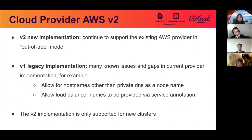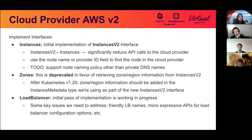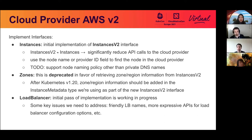To develop the cloud provider implementation, we need to implement a few common interfaces like instances, load balancer, and zones. The instances and zones interface methods will be called from the node and lifecycle controllers; the load balancer interface methods will be called from the service controller. For instances, we have an initial implementation of the instances v2 interface. Instances v2 is an implementation for instances and should only be implemented by external cloud providers — it is behaviorally identical to instances but optimized to significantly reduce API calls to the cloud provider when registering and syncing nodes.